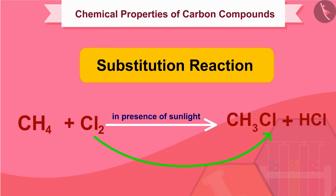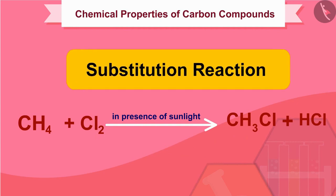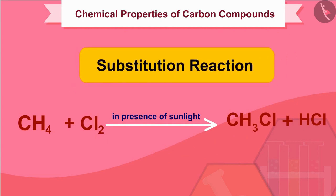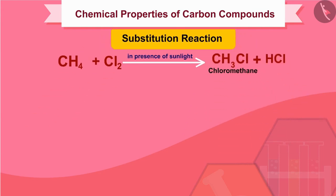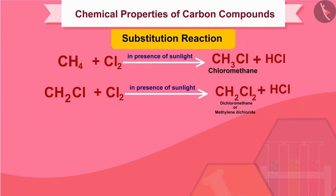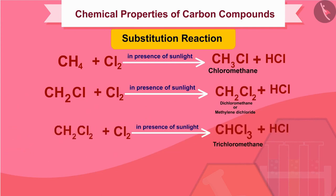Chlorine can replace the hydrogen atoms of methane one by one. In the given reaction, only one hydrogen atom of methane has been replaced by a chlorine atom and we get chloromethane. By supplying more chlorine, it is possible to replace all hydrogen atoms of methane by chlorine one by one, obtaining three more compounds: dichloromethane (methylene dichloride), trichloromethane, and tetrachloromethane.